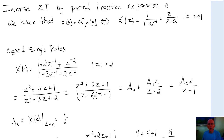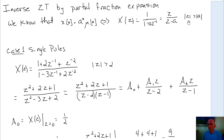We know some transforms already. When we looked at the Z-transforms, for example, if x of n is a to the n times mu of n, where mu of n is the step function, we know its transform is 1 over 1 minus a z to the minus 1, or z over z minus a, and its region of convergence is the magnitude of z greater than the magnitude of a. So we can use that to find inverse Z-transforms.